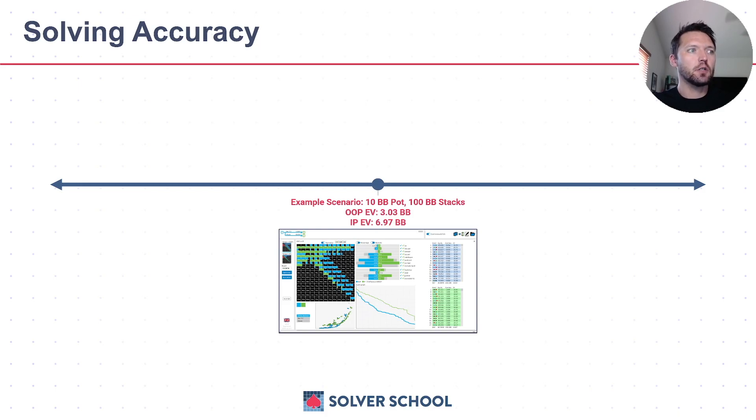I'd like to think of this example scenario where we have a 10 big blind pot with 100 big blind effective stacks. I picked an under the gun versus big blind scenario. The green represents the equity of the in-position player and the blue represents the equity of the out-of-position player. You can see from this graph that the in-position player is going to have a massive advantage on this particular scenario. As a result, the in-position expectation value is almost 70% of the pot, 6.97 big blinds, and the out-of-position player has just over 3 big blinds or just over 30% of the pot.